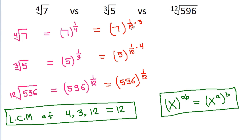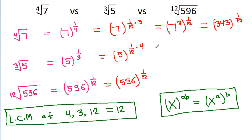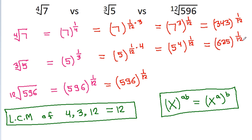So, 7 to the power 1 by 12 times 3 will be equal to 7 to the power 3, all raised to the power 1 by 12. And 7 cubed is 343, so this is 343 to the power 1 by 12. And 5 to the power 1 by 12 times 4 will be 5 to the power 4, all raised to the power 1 by 12. And 5 to the power 4 is 625, so this is 625 to the power 1 by 12. And this is 596 to the power 1 by 12.